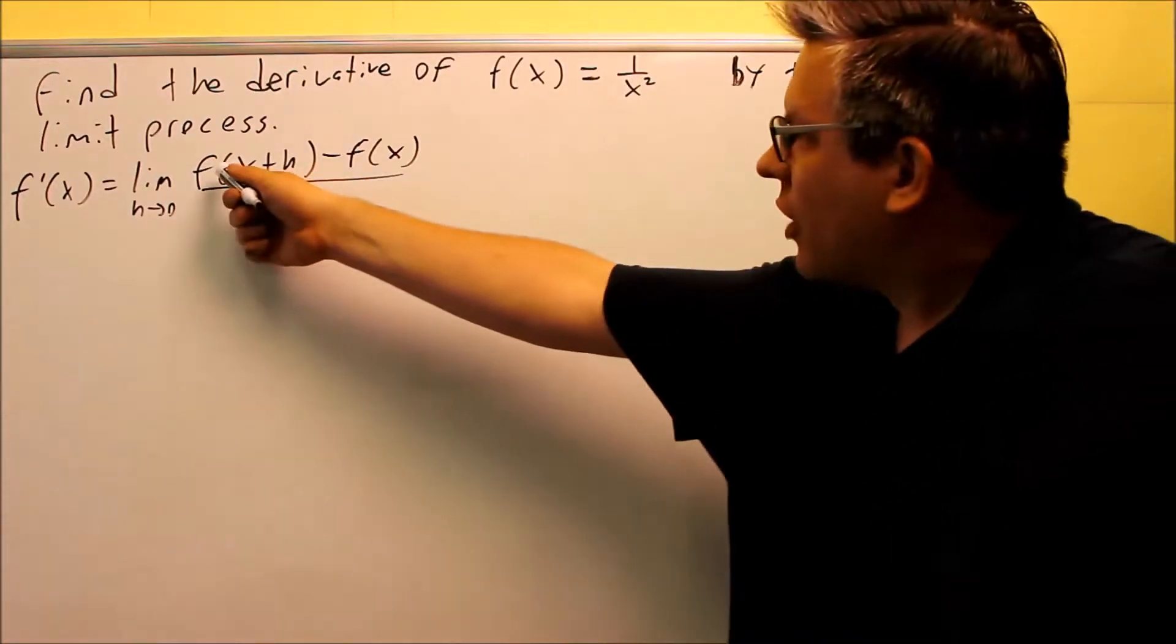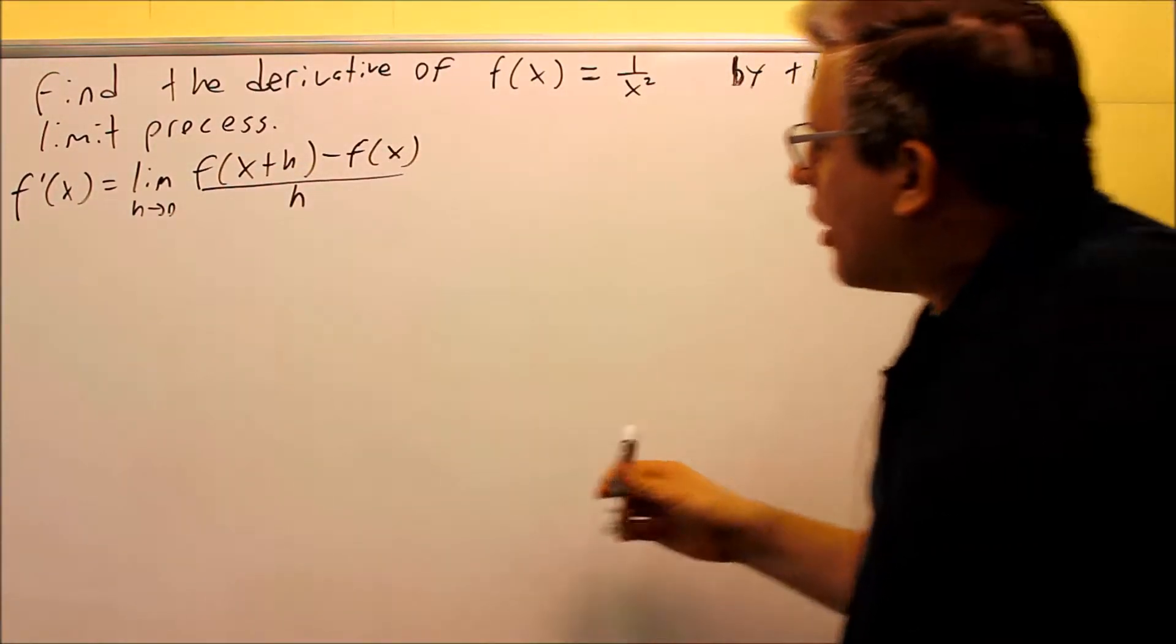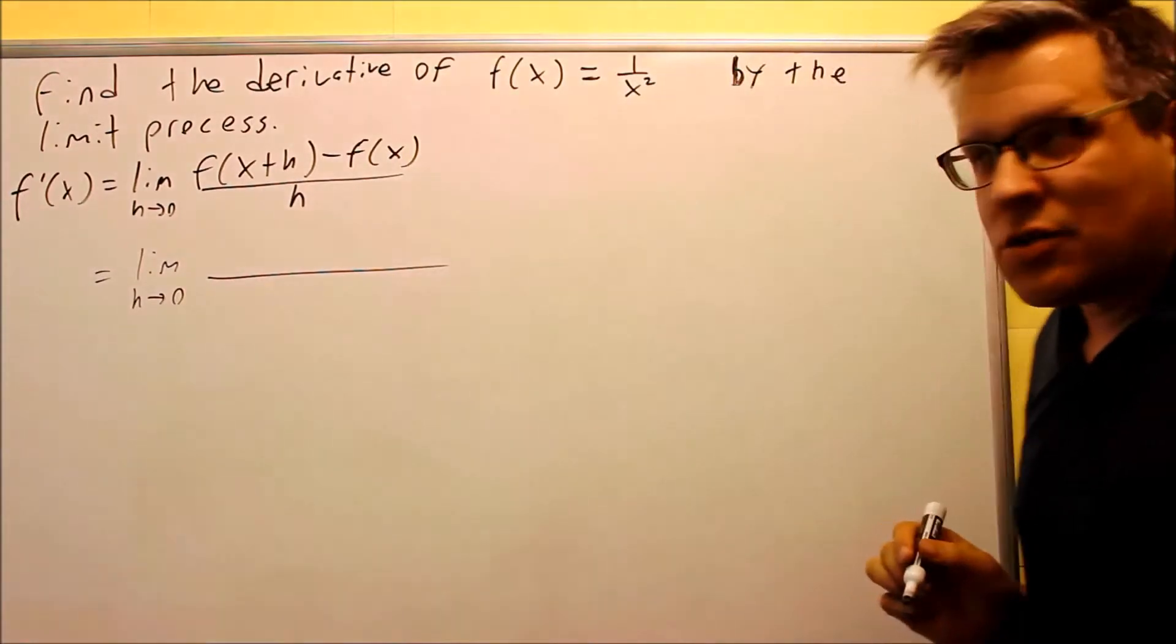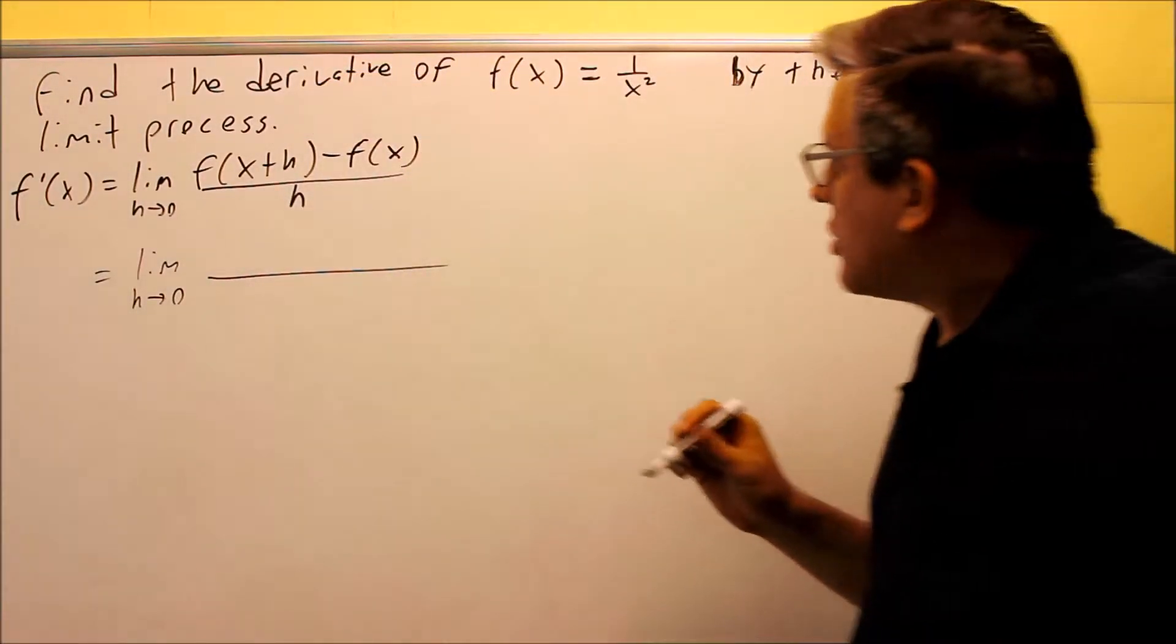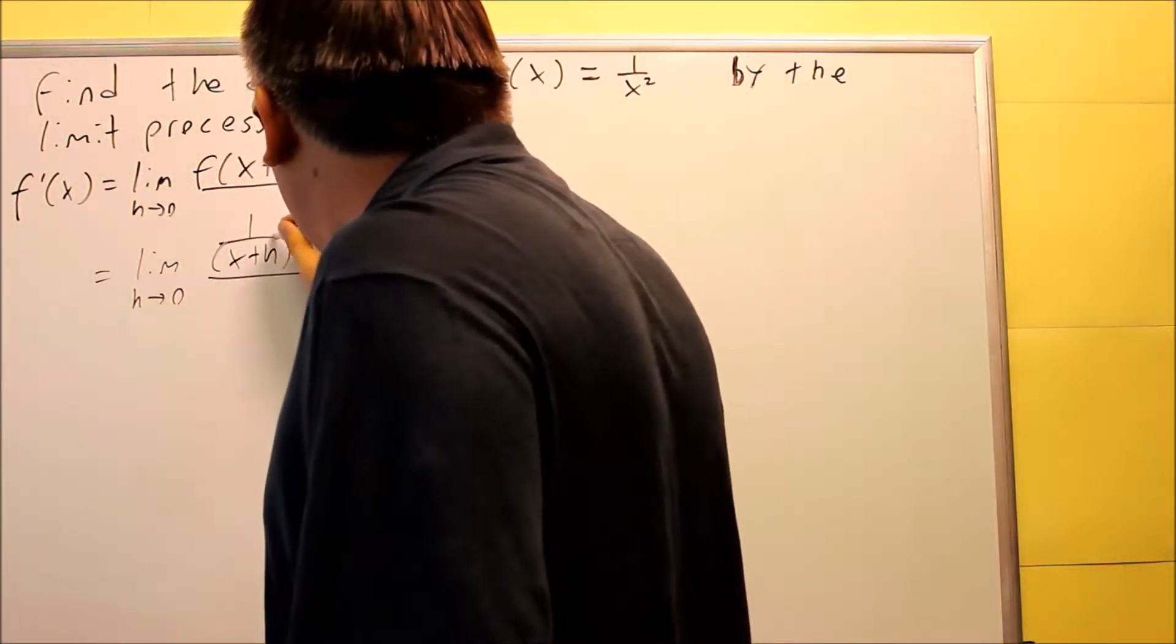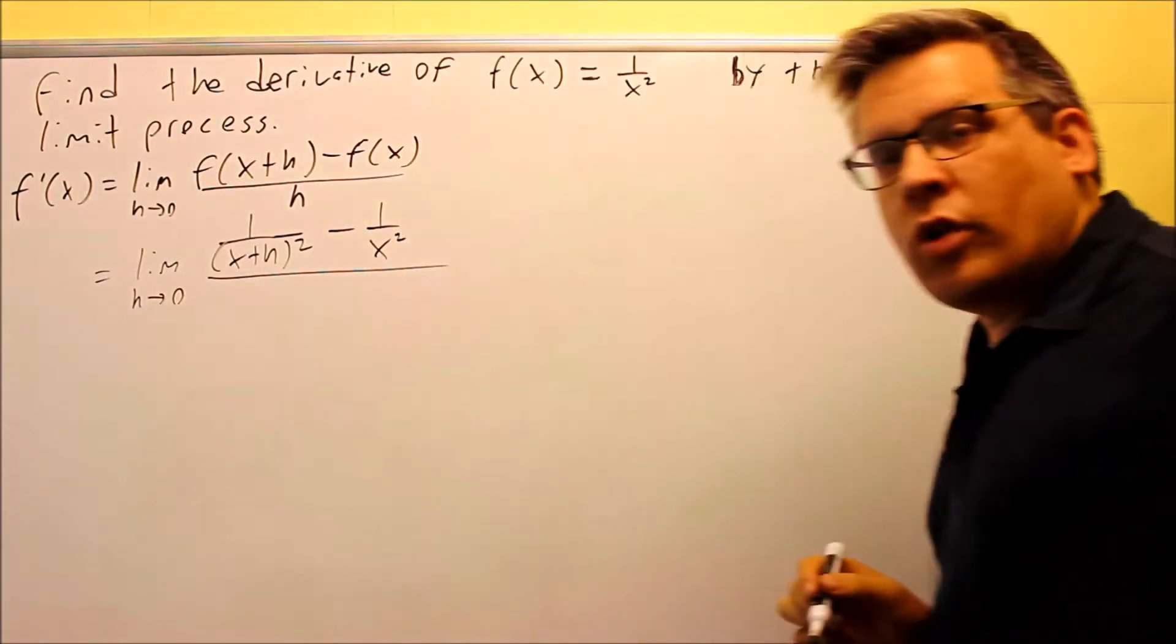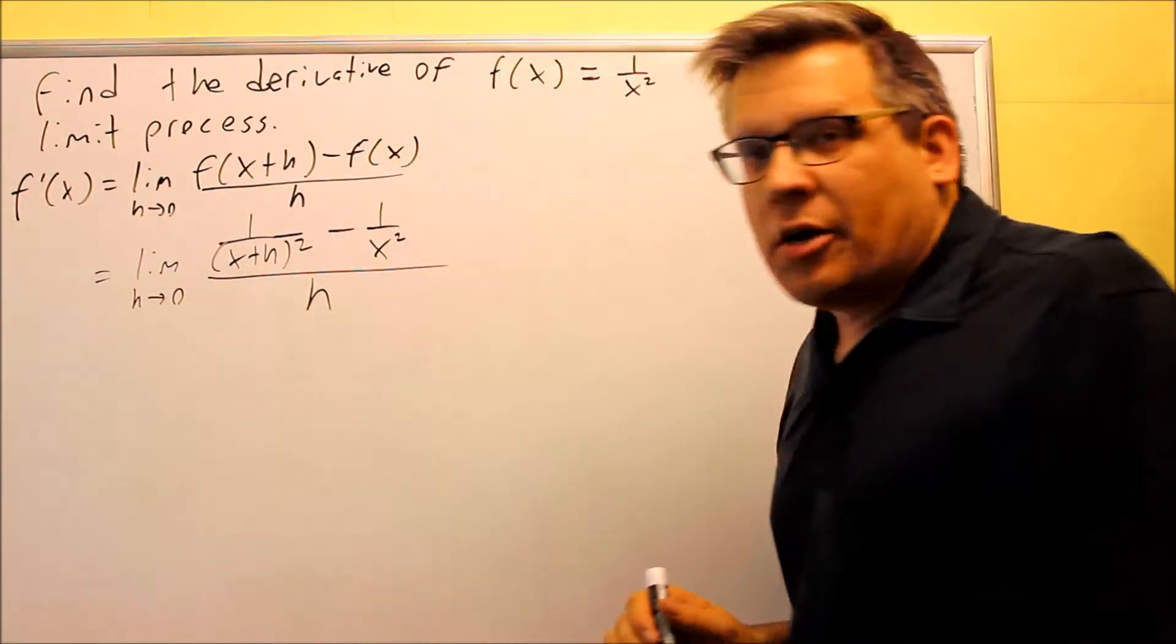We're going to plug things in. We want to find f of x plus h, and also f of x. Okay, so first we're going to do f of x plus h. x plus h is going to go on the bottom in place of x, so we're going to do 1 over (x+h) squared, and then minus f of x. f of x is given as 1 over x squared, so we'll put that in, and have h on the bottom. So we're just filling in for each of the steps there.